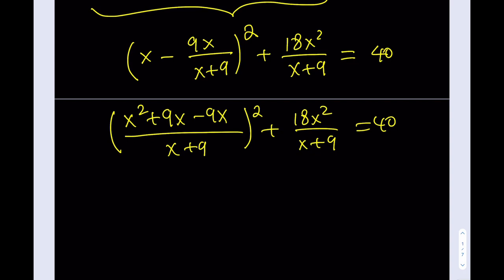So I'm going to go ahead and make a common denominator at this point. So I'll be getting x squared plus 9x minus 9x all over x plus 9, and this expression will be squared, and then I'll add the 18x squared over x plus 9. See what happens here. The 9x is going to cancel out. So this is the very reason I go by the minus version, because this is when I can simplify things.